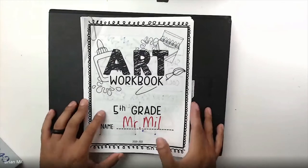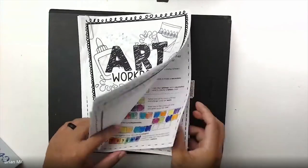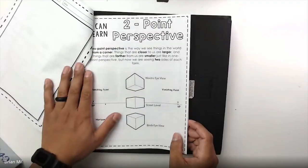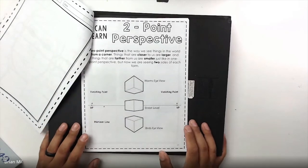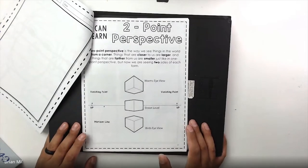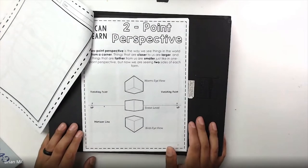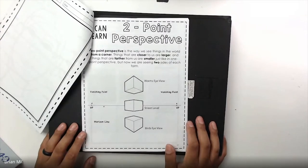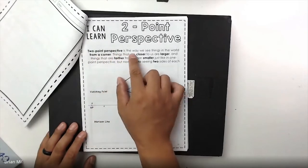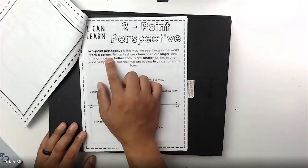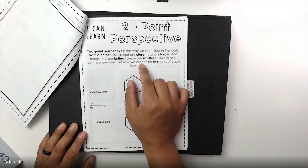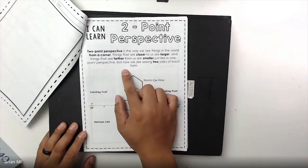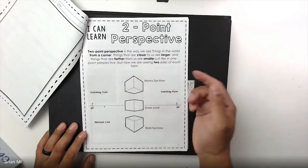So the workbook we were working on — I believe facial proportions — so the next page is two-point perspective. This is going to be the next page we talk about. Let me just read this out to you guys real quick. Two-point perspective is the way we see things in the world from a corner. Things that are closer to us are larger, and things that are farther from us are smaller, just like in one-point perspective.